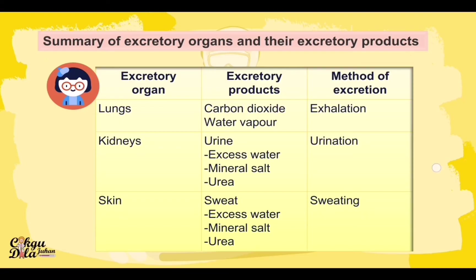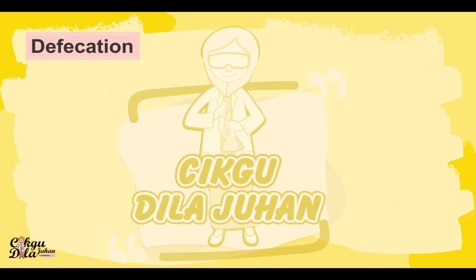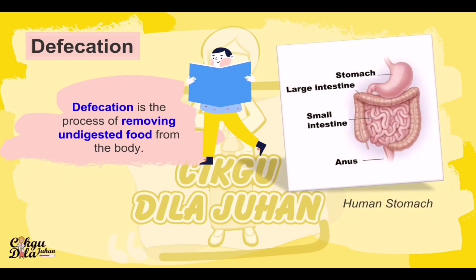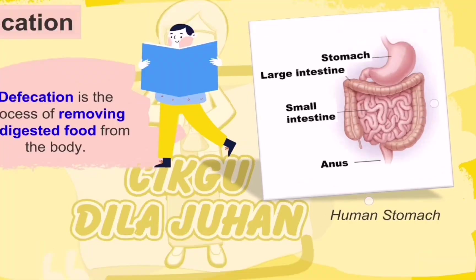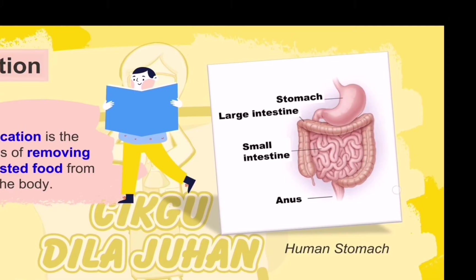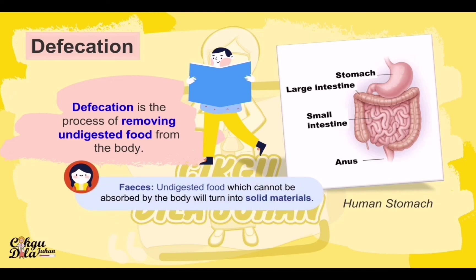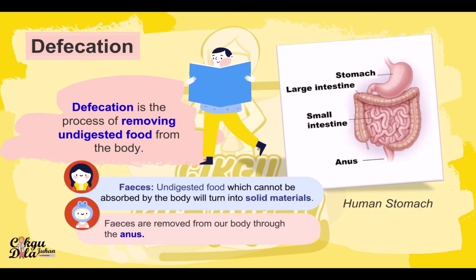Through sweating, the skin excretes as well. Next, we move to defecation. Defecation is the process of removing undigested food from the body. This is the human digestive system — we have a large intestine, small intestine, and the anus. Feces is undigested food which cannot be absorbed by the body and turns into solid material — what we call poop. Feces are removed from our body through the anus.